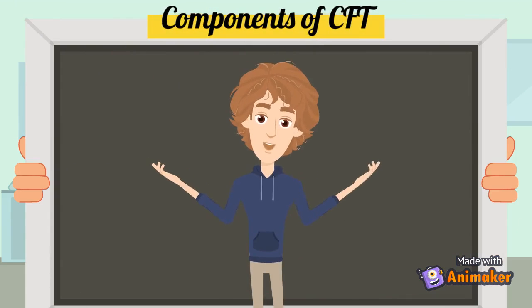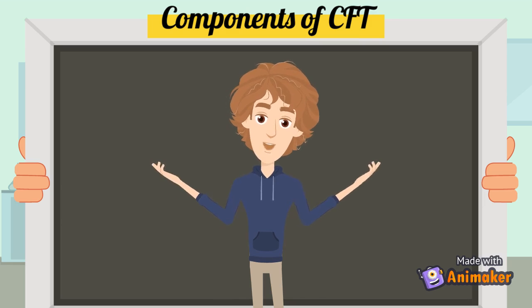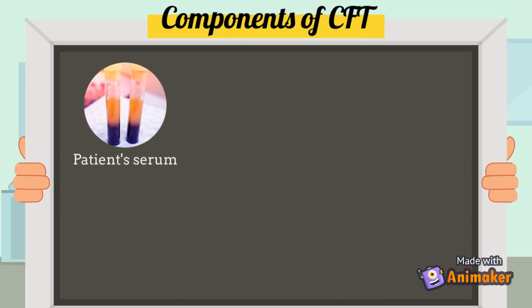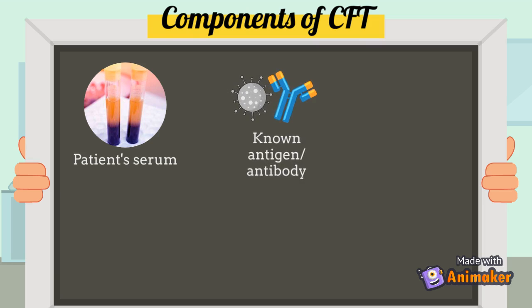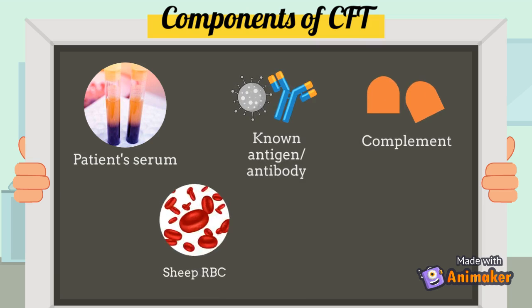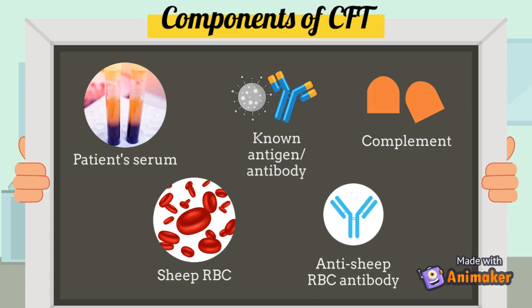There are components that need to be prepared for the complement fixation test: patient serum that has been heated at 56 degrees for 30 minutes, a prepared known antigen or antibody, complement obtained from guinea pig, sheep red blood cells, and anti-sheep red blood cell antibody. These last three components form the indicator system.